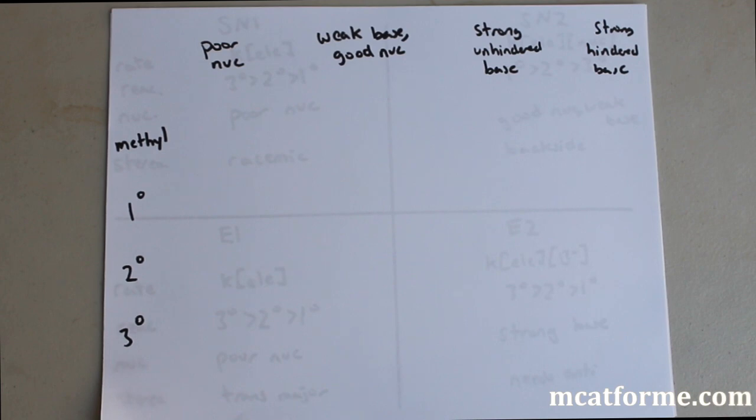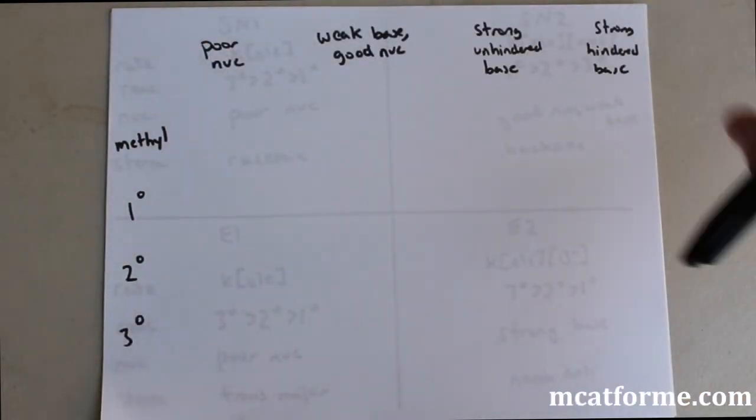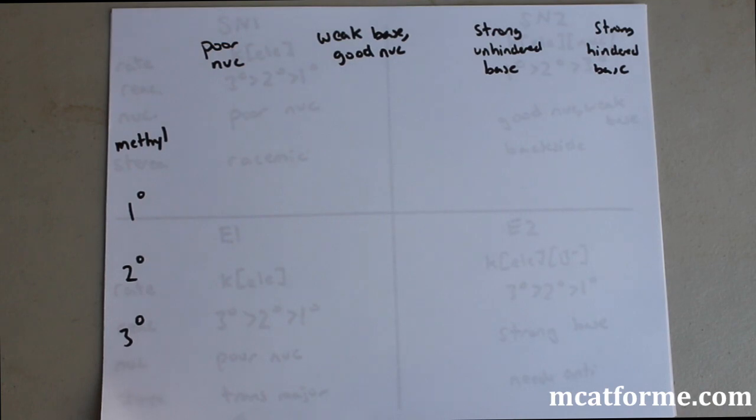Now that we've gone over all the SN2, SN1, E2, and E1 reactions, we're going to go over a table to summarize everything because it can get kind of confusing if we know all those facts but don't know really how to orient ourselves. What I've drawn here is a table divided into nucleophiles or bases, and in the Y column we have what type of carbon it is: methyl, primary, secondary, or tertiary.